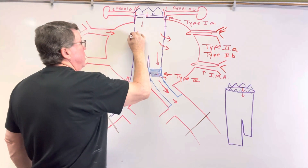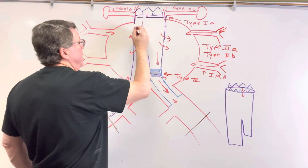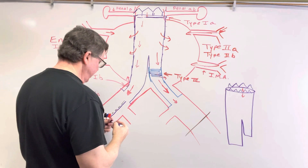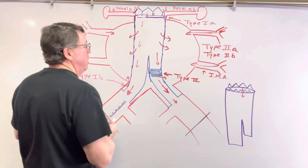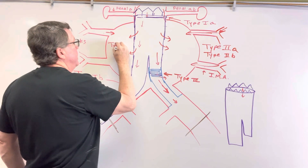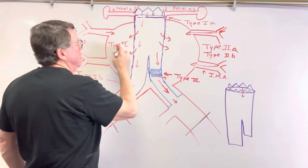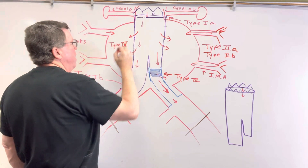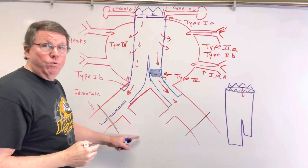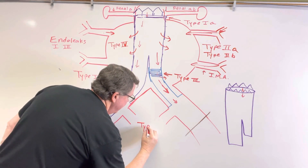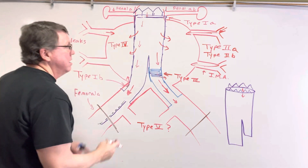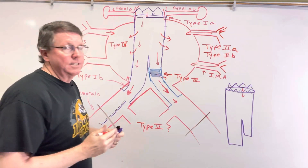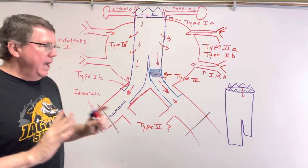Type 4 endoleak is when blood just happens to leak out through the graft material itself — this is also getting more rare now. Unlike types 1 and 2, type 3 doesn't have subtypes a and b. The last type is type 5 — I put a question mark because everything seems to be working okay, there doesn't appear to be any problems with the graft, but the aneurysm still increases in size.